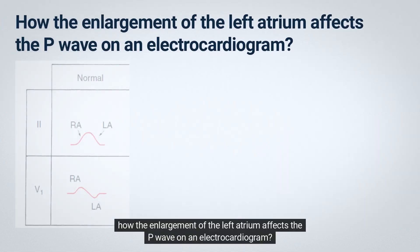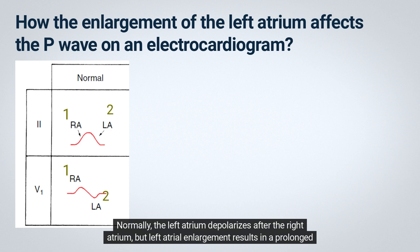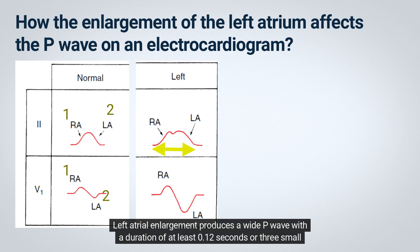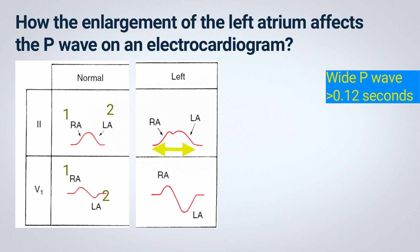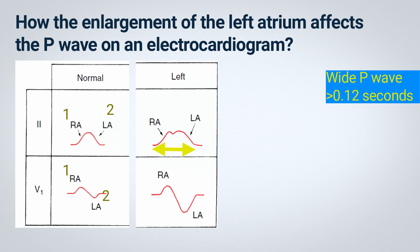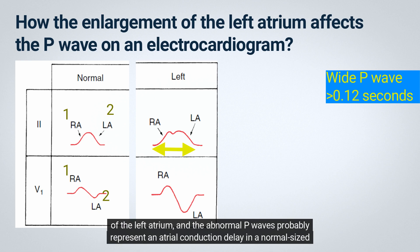Left atrial enlargement affects the P-wave on an electrocardiogram. Normally, the left atrium depolarizes after the right atrium, but left atrial enlargement results in a prolonged duration of atrial depolarization, which is indicated by an abnormally wide P-wave. Left atrial enlargement produces a wide P-wave with a duration of at least 0.12 seconds or three small boxes. The amplitude of the P-wave may be normal or increased. In some cases, patients with coronary artery disease may have broad P-waves without detectable enlargement of the left atrium, and the abnormal P-waves probably represent an atrial conduction delay in a normal-sized chamber.